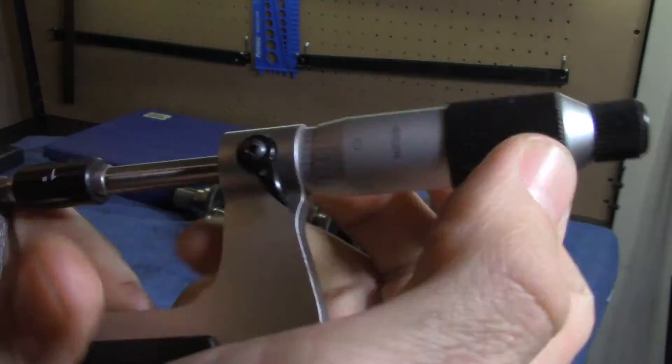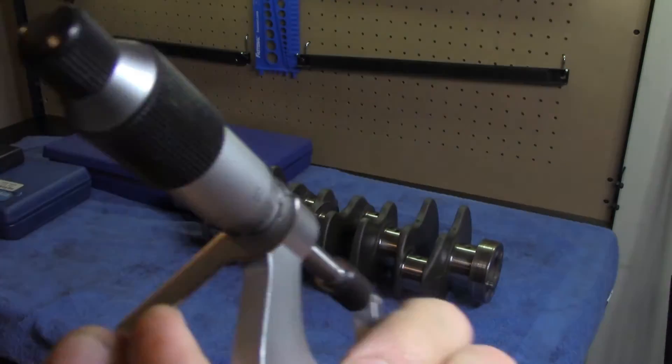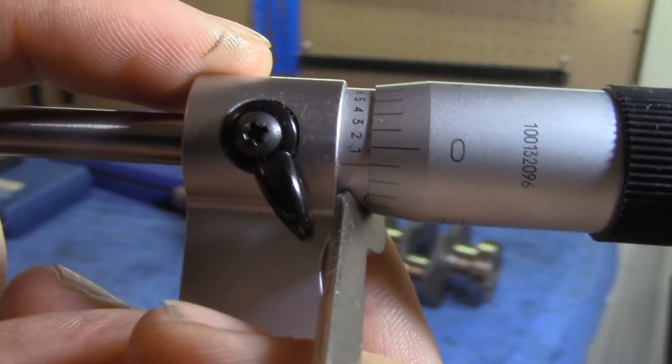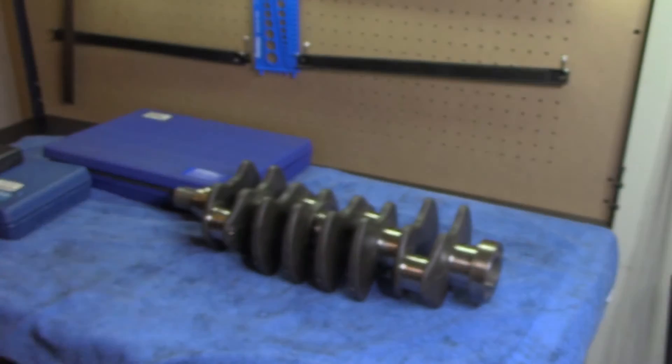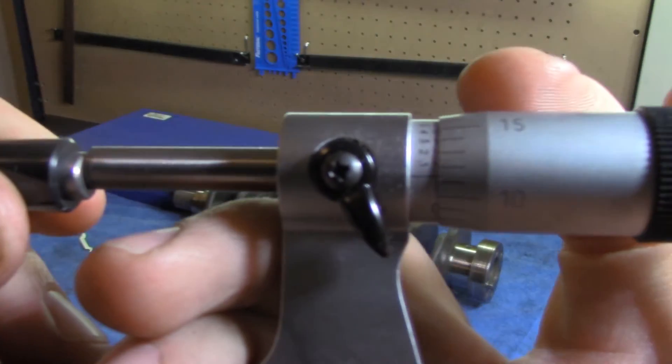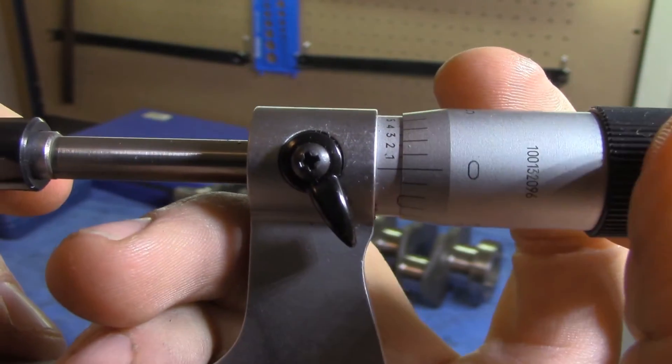Anyway, the barrel should turn easily. This one has never been adjusted, so it's a little stubborn at first, but once moved it's easily adjusted to zero. Notice how it constantly zeroes while you're using the ratcheting stop to apply the same amount of torque each time.